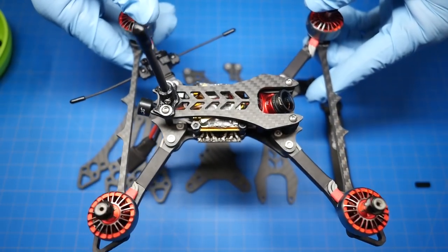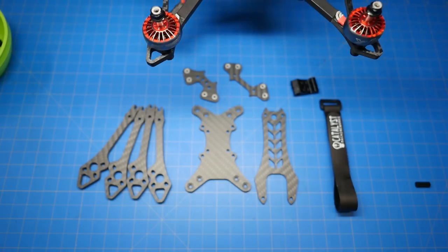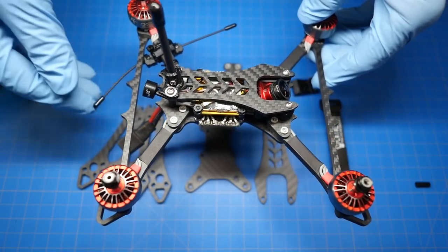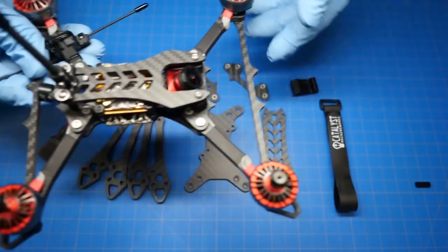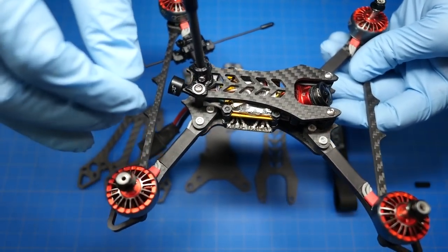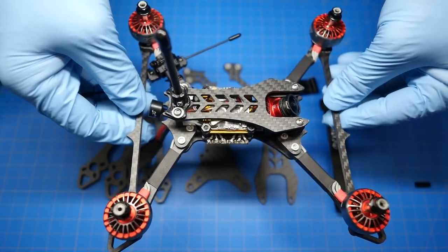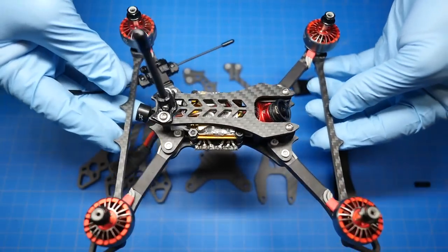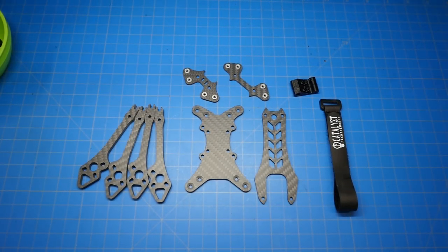The order in which I assemble these parts obviously might be different once you start installing your electronics. But this is a very simple frame. There's just not a lot of components to it. It's simplistic, so a lot of this is self-explanatory. But there are some very important aspects of putting this thing together that I need to point out.